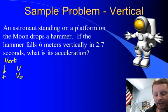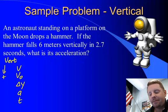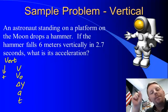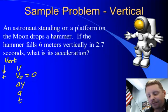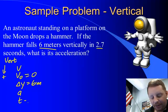v, v-naught, delta y, a, and t. If you drop something, its initial velocity must be zero, so we'll fill in v-naught is zero. It falls 6 meters vertically, delta y must be 6 meters, in 2.7 seconds. Time elapsed 2.7 seconds.